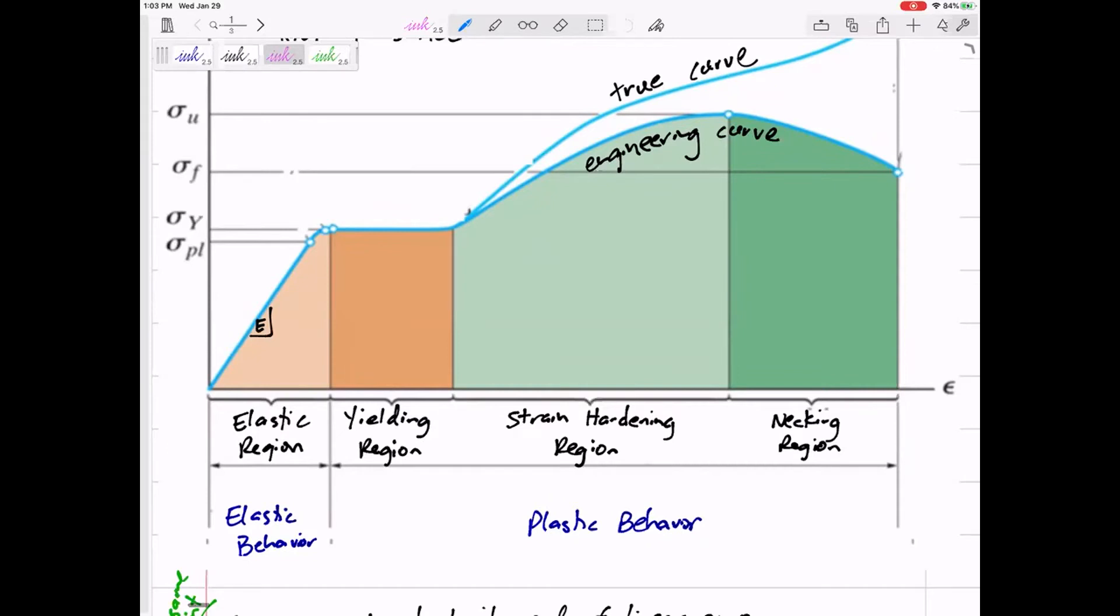There's the elastic region, the yielding region where it's harder, the strain hardening region where the stress gets higher and higher, and then it starts to get a portion—a localized portion—where you can tell it's about to break.